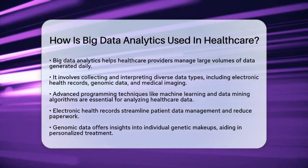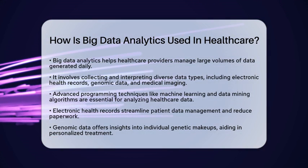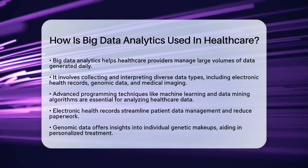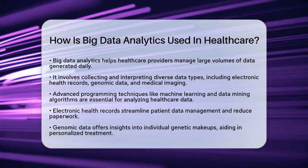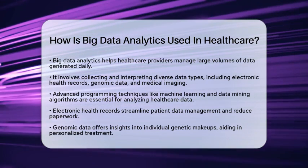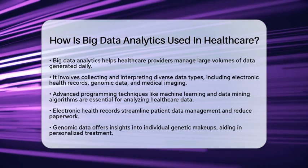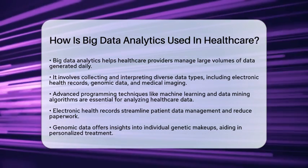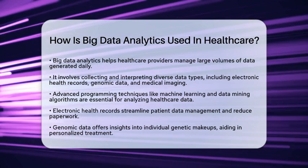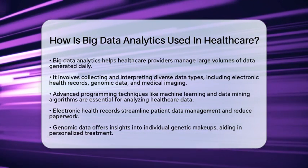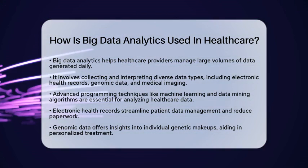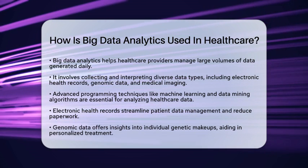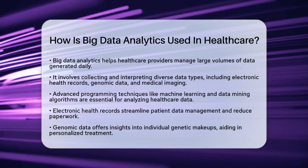Healthcare data comes in various forms. Electronic health records are one of the most common types — they help streamline patient data management and reduce paperwork. Genomic data provides insights into individual genetic makeups, while medical imaging captures crucial visual information about a patient's condition. Sensor data from medical devices also contributes to the overall picture of a patient's health.